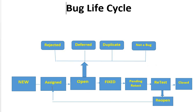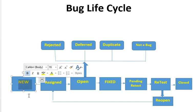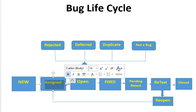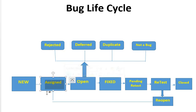The first stage is New. The new stage is the first state of a defect when it is registered. The bug in the new state shows there is a deviation from the correct behavior of the product, and the tester has created a new defect in the bug tracking tool. The details of the defect include ID, priority, severity, affected areas, and recreation steps.